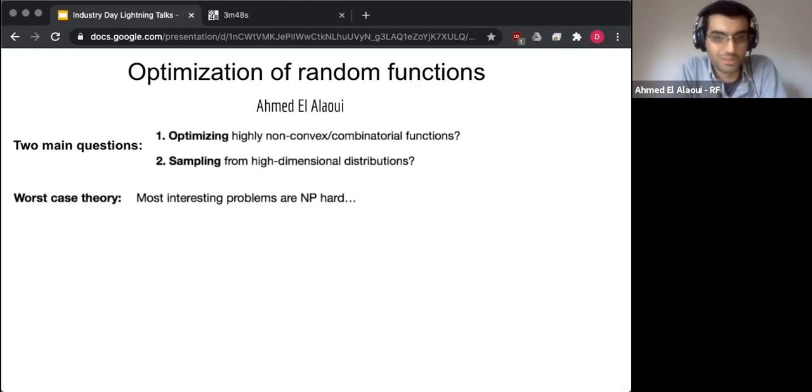The main two questions we want to understand is trying to optimize highly non-convex and combinatorial functions in high dimensions, and also a related question is to sample from high dimensional distributions that are not necessarily nice. So worst case theory here tells us that all of these problems, the most interesting cases are NP-hard.